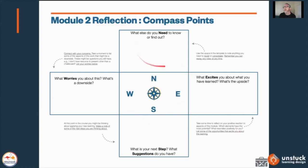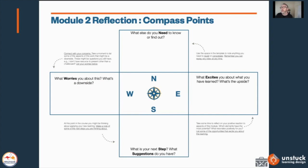Compass points uses Northeast, Southwest, and West directions. Northeast: what else do you need to know or find out? For example, if you want to learn more about working memory and dual coding, you'd write that here. What excites you — what's the upside, the positives? Write anything you're excited about. On the West: what worries you? What might be a downside? For example, you might not have resources for dual coding visually, but even a simple diagram on a chalkboard can help.